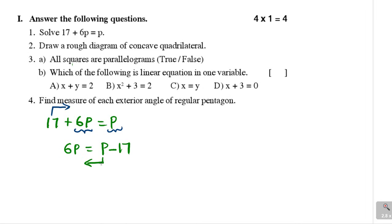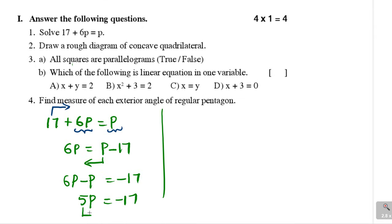Now bring p to the left side. So 6p minus p equals negative 17. That gives us 5p equals negative 17. We can send 5 to the right side — since 5p means 5 times p, it will divide the right side. So p equals negative 17 divided by 5. This is the answer for the first problem.